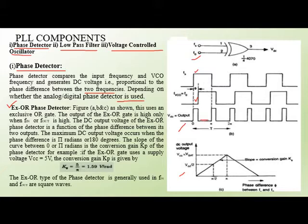The output voltage of the XOR gate phase detector is a function of the phase difference. The maximum DC output occurs when the phase difference is between 0 and π. The slope of the curve from 0 to π gives the conversion gain Kp of the phase detector.